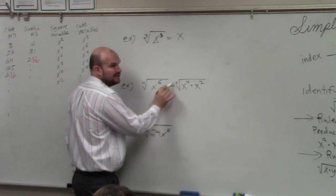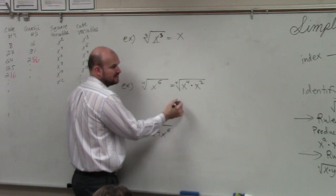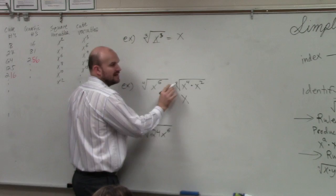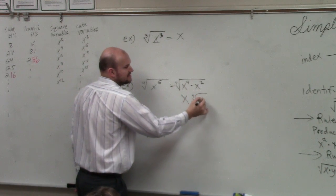Now I can use my identity element. The fourth root of x to the fourth is x. I can't do anything with x to the fourth x squared, right? So that answer is x squared.